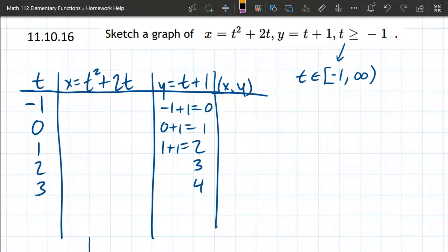Our t values are greater than or equal to negative 1. I like interval notation, so I'm going to write it as interval from negative 1 to infinity.